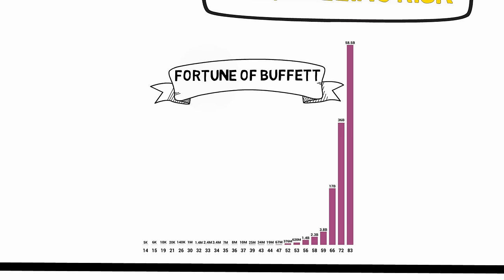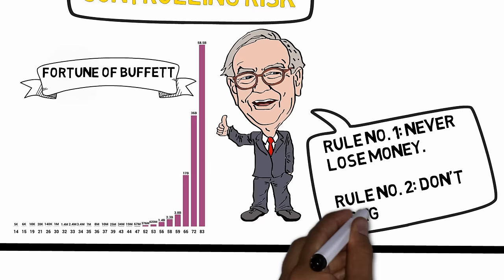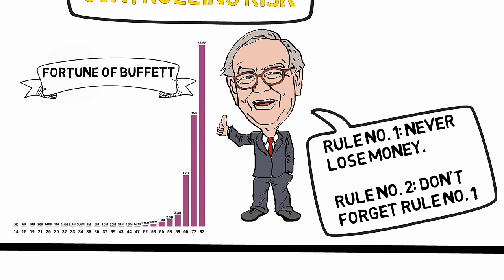Warren Buffett is onto the same thing when he says that rule number one is never lose money, rule number two is don't forget rule number one. To make things more complicated though, the fact that the benefits of controlling risk only comes in the form of losses that don't materialize makes it difficult to measure.